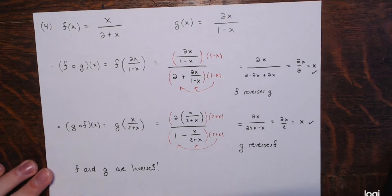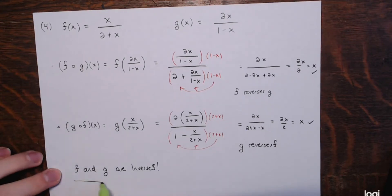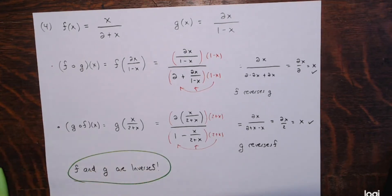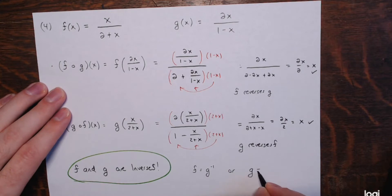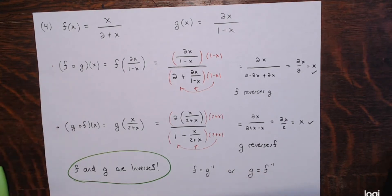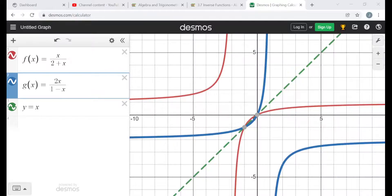You could say that f is g-inverse, or that g is f-inverse. Since they are inverses, their graphs should be just a reflection across the line y=x, which it looks like from this picture.